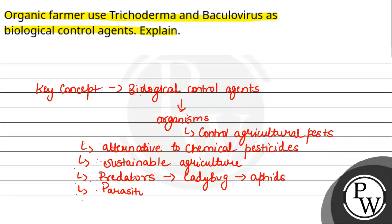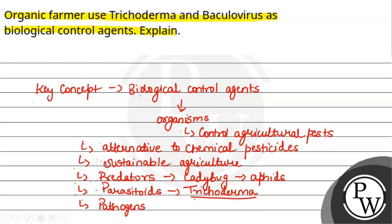Second are parasitoids. Parasitoids lay eggs on or inside host insects and colonize there. Third are pathogens — this category includes bacteria, fungi, etc. An example of pathogens used as biological control agents is baculoviruses.